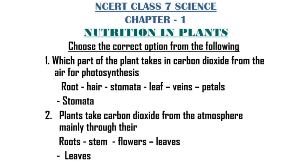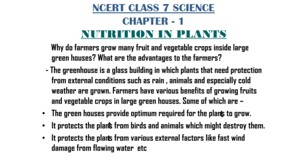That was choose the correct option from the following. Now at the last question: why do farmers grow many fruits and vegetables in large greenhouses? What are the advantages to the farmers? The greenhouse is a glass building in which plants that need protection from external conditions such as rain, animals, and especially cold weather are grown. Farmers benefit in various ways: greenhouses provide optimum conditions required for plants to grow, protect plants from birds and animals which might destroy them, and protect plants from external factors like fast wind and damage from flowing water.